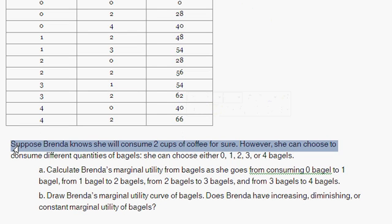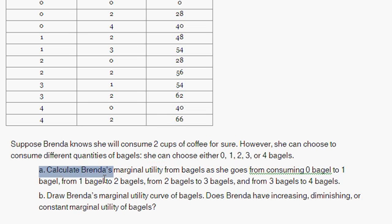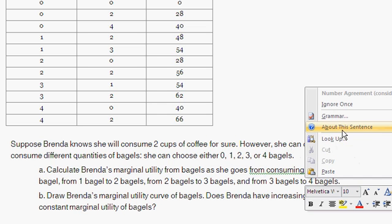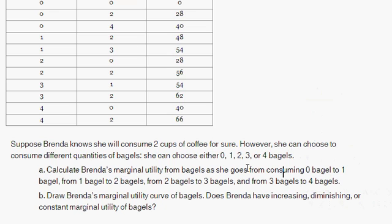Suppose Brenda knows that she will consume two cups of coffee for certain. However, she can choose different quantities of bagels — either zero, one, two, three, or four bagels. Part A: calculate Brenda's marginal utility from bagels as she goes from consuming zero bagels to one bagel, from one bagel to two bagels, from two bagels to three bagels, and then from three to four bagels.